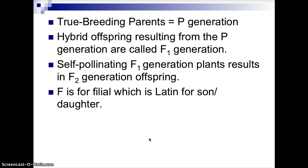True breeding parents are called the P generation. The hybrid offspring from the P generation are called the F1 generation. Self-pollinating F1 generation plants results in F2 generation offspring, and so on. P stands for parental generation, and F stands for filial, which is Latin for son or daughter plants — so these would be the son or daughter offspring after a parental cross.